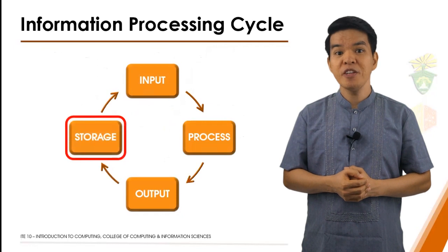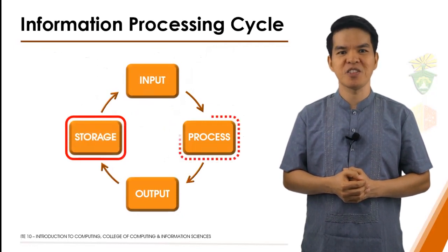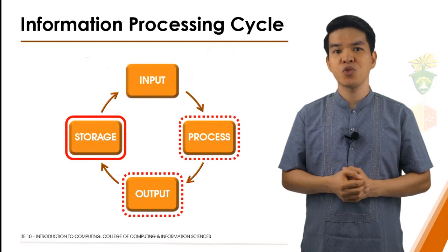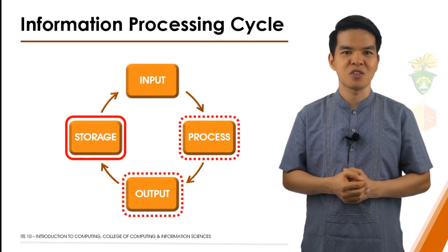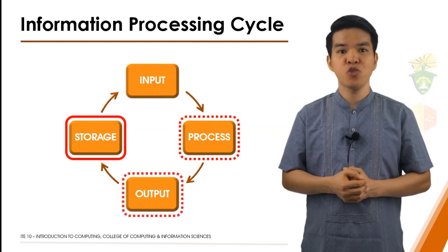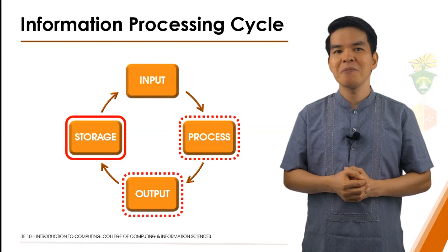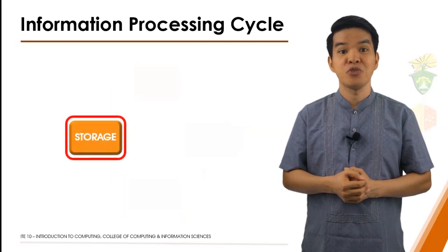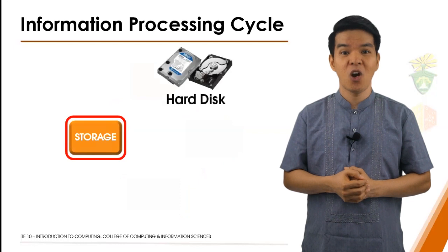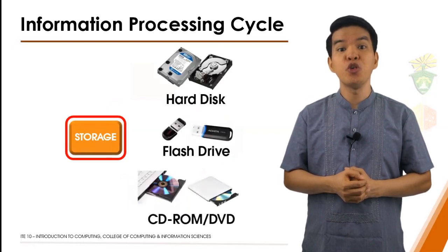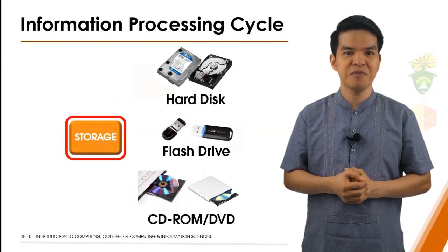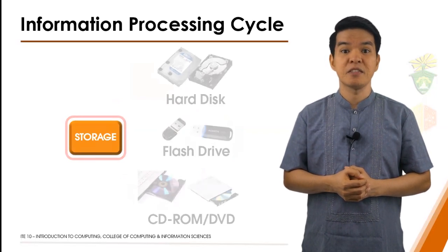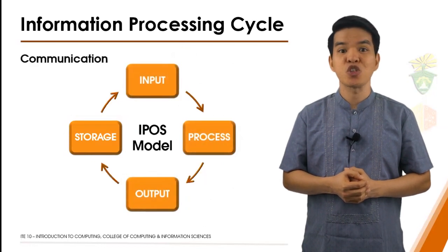Now here comes the storage stage of the IPOS model. This stage can occur directly from or to the processing or output stages, because the processing stage may need to store data for later use or recall previously stored data for processing new data from the input stage. The output stage may also store processed data as information for display by another IPOS module when needed. The storage stage does not only store data or information on a fixed storage medium such as a hard disk, but can also store data on removable media such as a flash drive, CD-ROM, or DVD. These stages are interlinked at every step of the way, and recently, communications have also been an essential element of the information processing cycle.